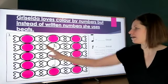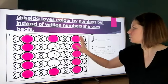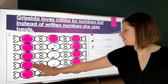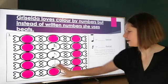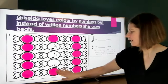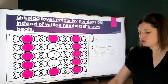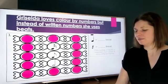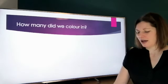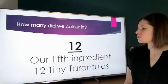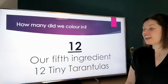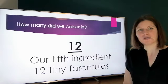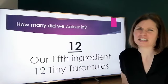So the question now is — how many sweets did we end up colouring in? Let's count them: 1, 2, 3, 4, 5, 6, 7, 8, 9, 10, 11, 12. Twelve sweets coloured in! So our fifth ingredient is twelve tiny tarantulas. I wasn't aware tarantulas came in a tiny size — I don't like them any size they are!